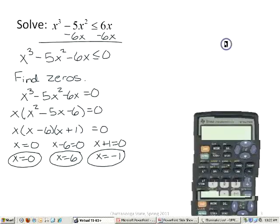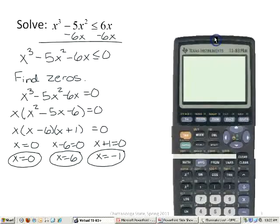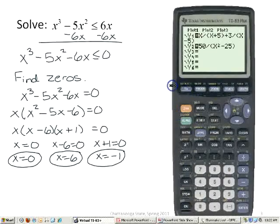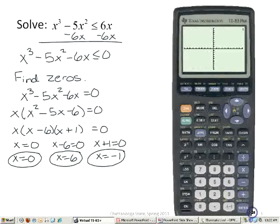Now I want to look at my graph. So I'm going to go to my y equals screen and type in my graph. Let me clear all this out. This is the function that I want to graph: x³ - 5x² - 6x. I want to set it on a standard window, so I'm going to do zoom 6 and I get a cubic graph there.